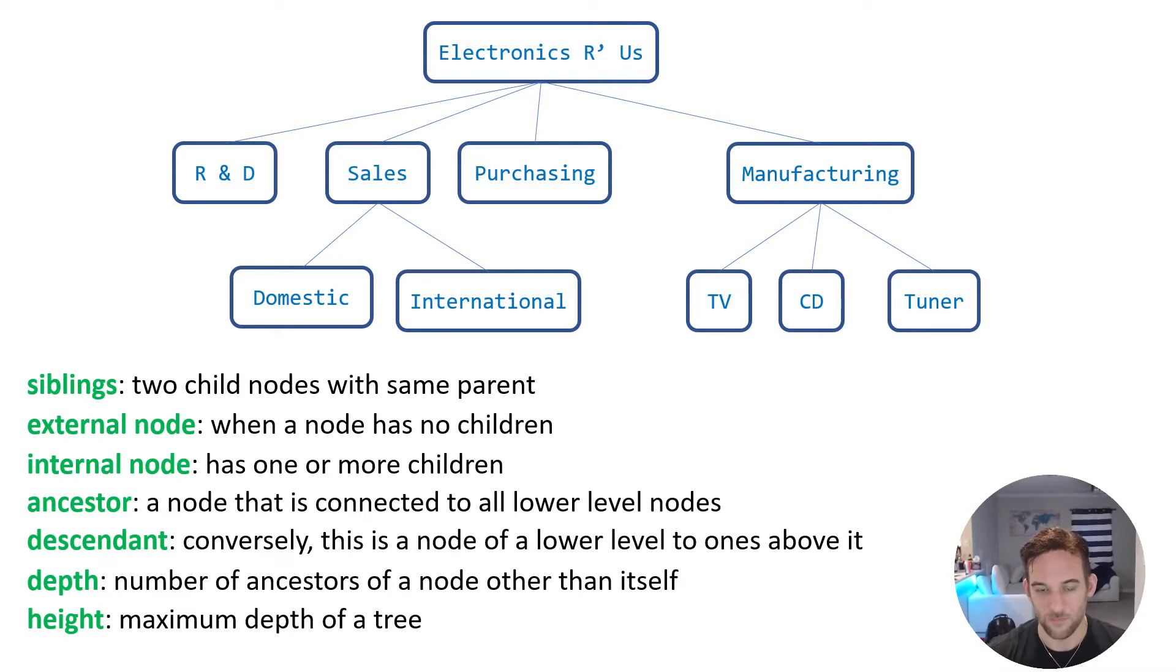Now ancestor, this is a node that's connected to all lower level nodes. So for instance, Electronics R Us is an ancestor to sales and domestic, international, purchasing, R and D. Basically, the root node is almost always an ancestor, unless it's the only node in the tree. So if we take a look at TV, which is an external node, its ancestors are manufacturing and Electronics R Us. It's the same for CD and tuner. If we look at international, which is again an external node, its ancestors are sales and Electronics R Us.